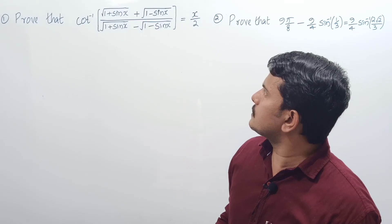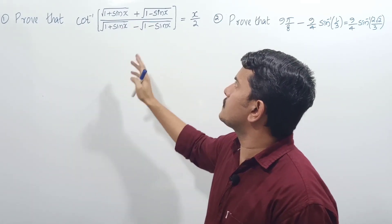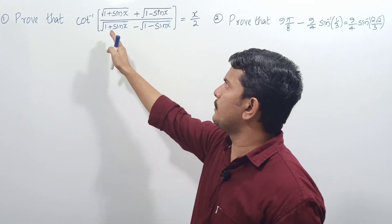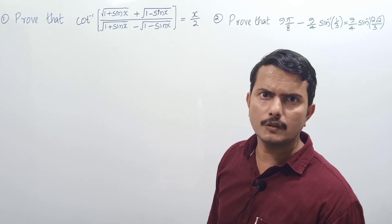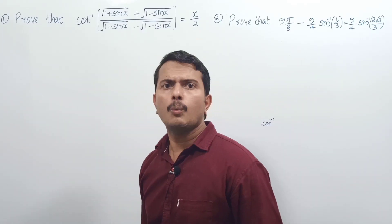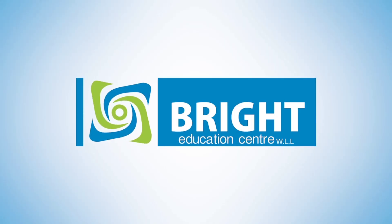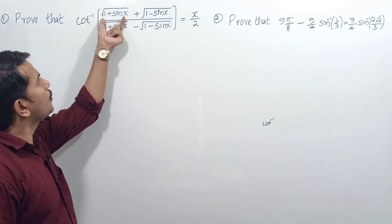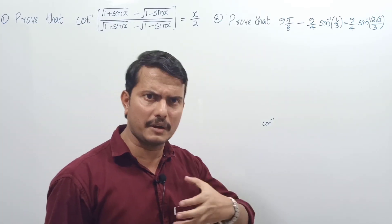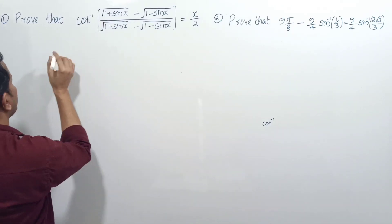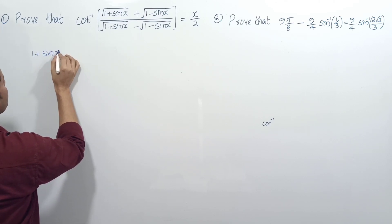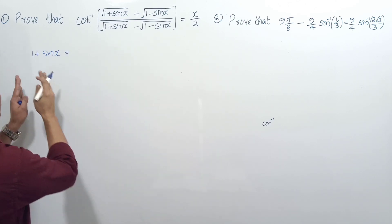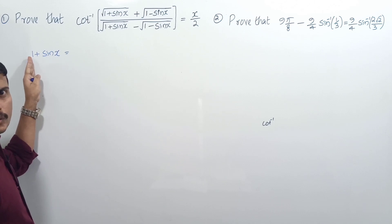Prove that cot inverse of (√(1+sinx) + √(1-sinx)) divided by (√(1+sinx) - √(1-sinx)) is equal to x/2. What we are going to do is convert 1+sinx. If I write 1, I can write it as cos²(x/2) + sin²(x/2), which equals 1.